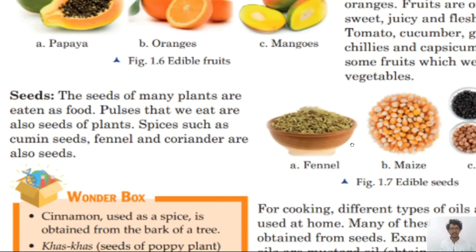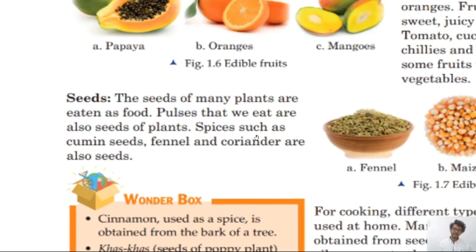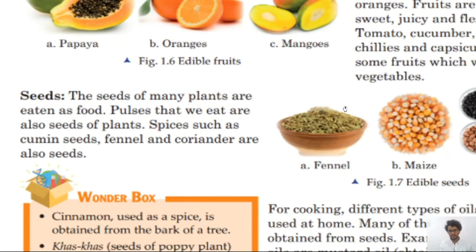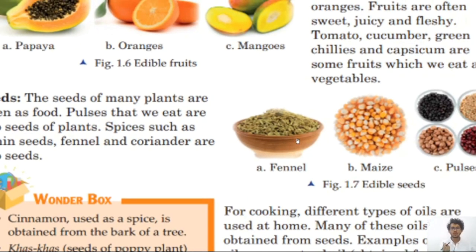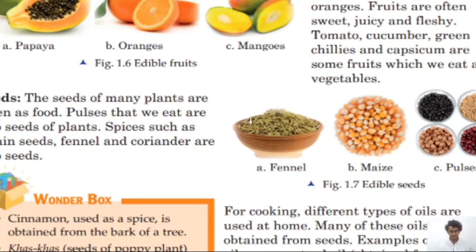Spices such as cumin seeds, fennel (saunf), and coriander are also seeds. Fennel means saunf — we eat these seeds. Maize, also called corn or bhutta, is also a seed that we eat.